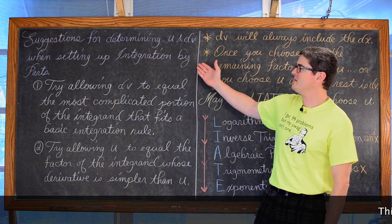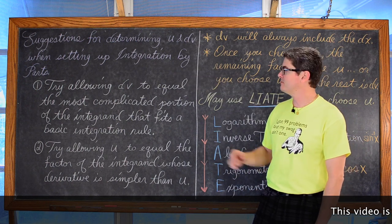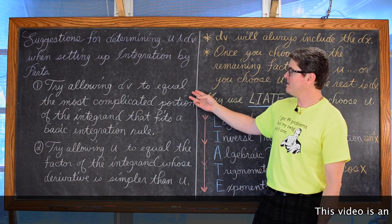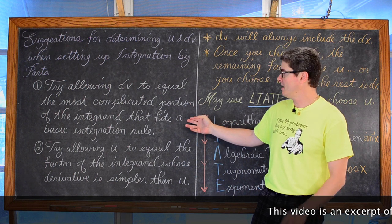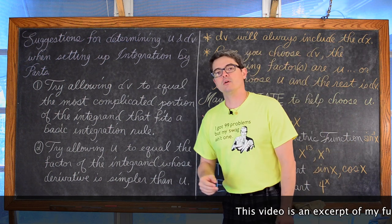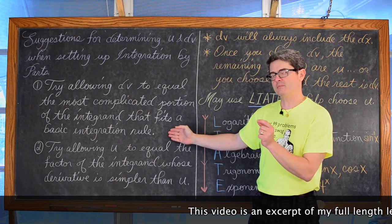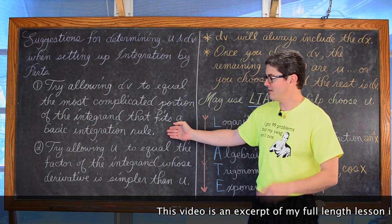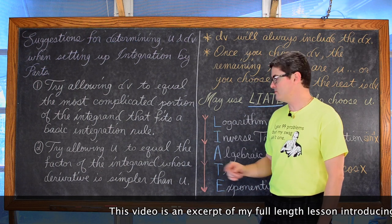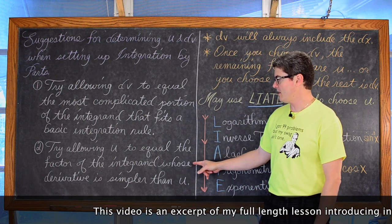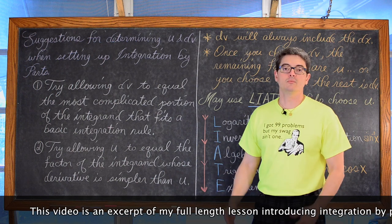Here are suggestions for determining u and dv when setting up integration by parts. Try allowing dv to equal the most complicated portion of your integrand that fits a basic integration rule. You might have to play around with it a little bit. Or try allowing u to equal the factor of the integrand whose derivative is simpler than u.